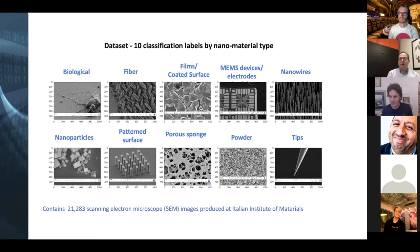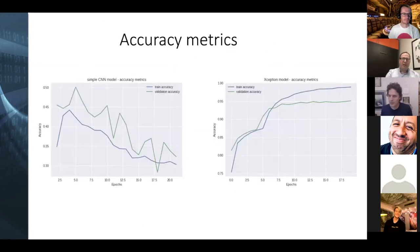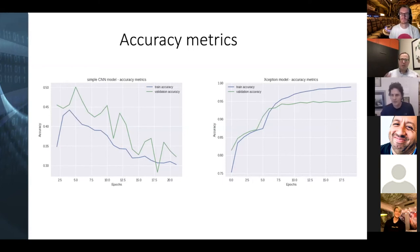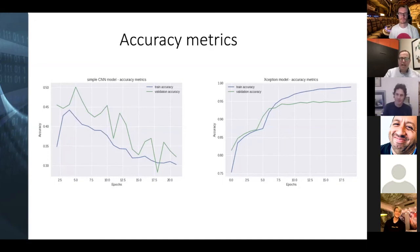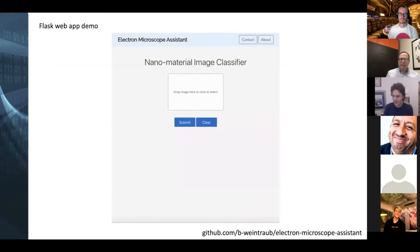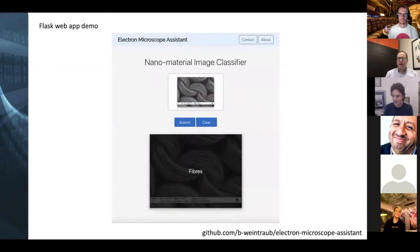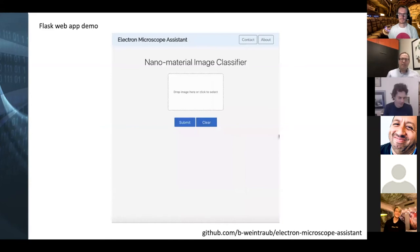Did you use transfer learning or a fresh neural network? I started with a plain two-layer CNN, and accuracy was actually pretty poor. The next step was to use the Xception model — a pre-trained model that had already looked at over a million other images — and then I built my model on top of that. In order to get the accuracy you see here, I needed to use that transfer learning with the Xception model.